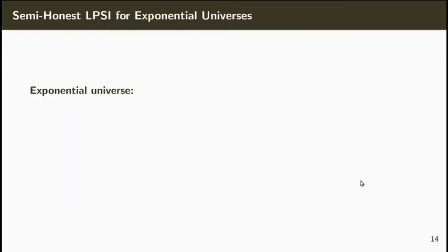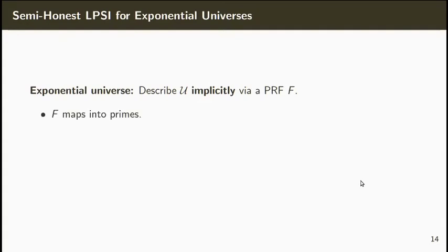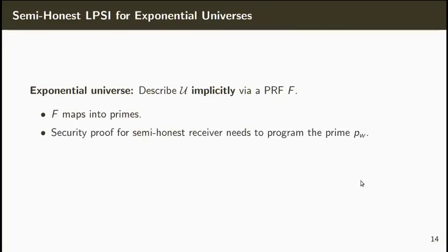We now show the main ideas to extend this protocol to support exponential universes. The main idea is to describe the universe implicitly via a PRF key. This PRF should map into the prime numbers. Recall that in the security proof for a semi-honest receiver we need to program one of the primes to use the phi-hiding assumption, so we'll use a programmable PRF in which we can program one of the PRF outputs.